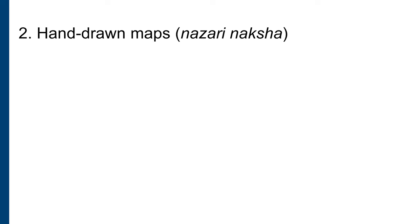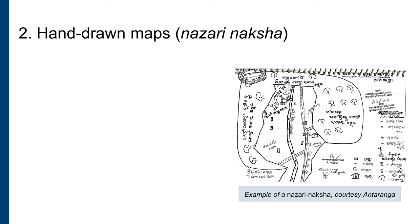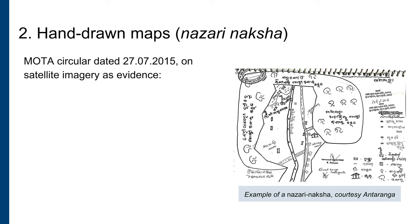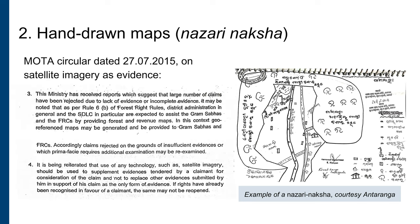Secondly, a Nazari Naksha or hand-drawn map is a perfectly acceptable piece of evidence. Rule 12a11 states that it is not necessary to provide satellite maps in support of claims. The Ministry of Tribal Affairs or MOTA has also issued a circular on 27th July 2015 that state governments cannot insist on satellite maps. Instead, where claimants are unable to find any other evidence, the state should assist them by providing satellite maps as supplementary evidence.